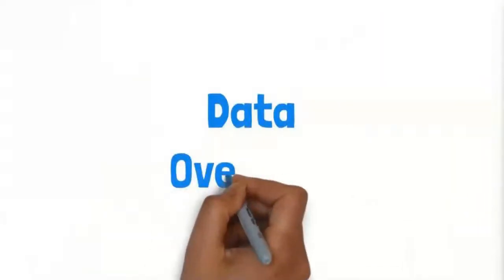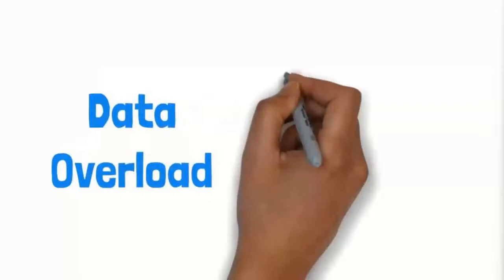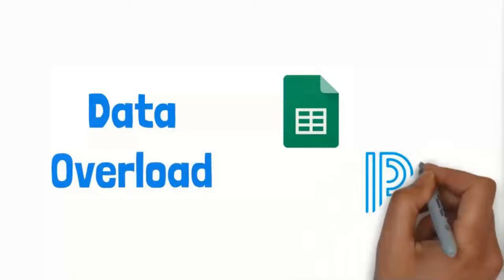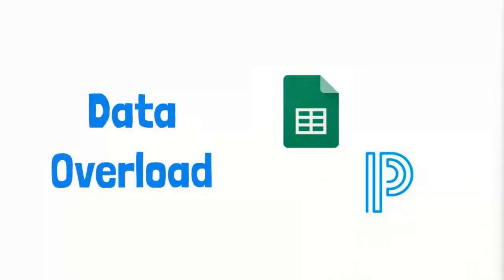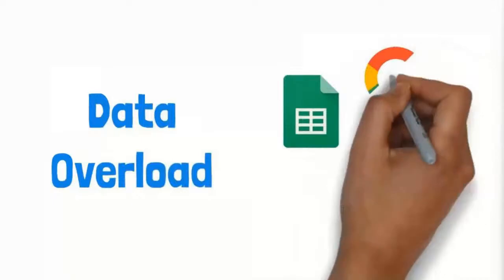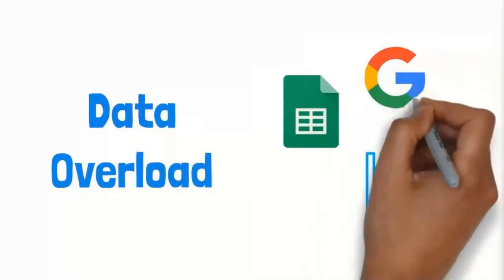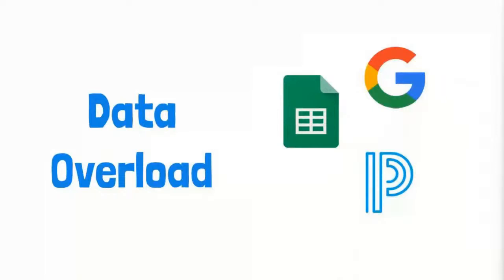The next challenge is the data source overload. There are many different data sources: you've got your SIS, the Google Admin Console, spreadsheets — these big reams of spreadsheets essentially trying to track who has which device, where the Chromebook went, which student has it, where that student is located, when was the device purchased, and what financial information exists about those devices. All these different sources are coming from different schools within the district, everybody trying to do it their own way.